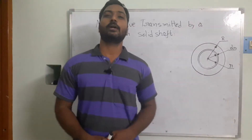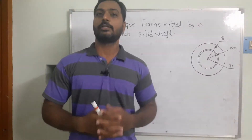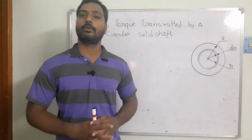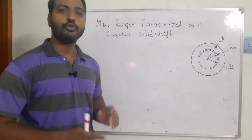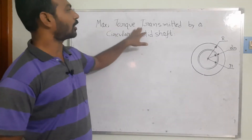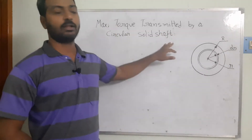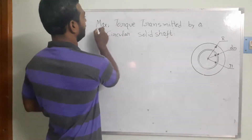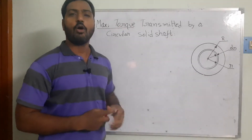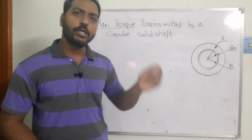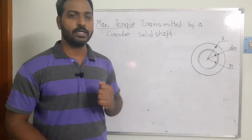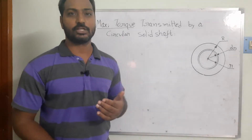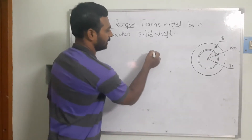Hello, welcome to the engineering tutorial classes. In this class today we are trying to learn how to determine the maximum torque transmitted by a circular solid shaft. When we determine the maximum torque, we are finding how much power we can transmit from one unit to another through the shaft, which is determined from the maximum shear stress.